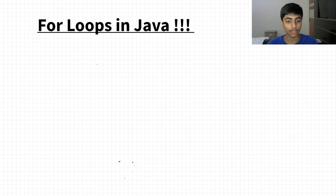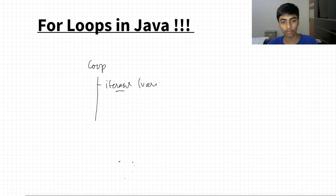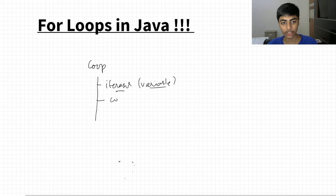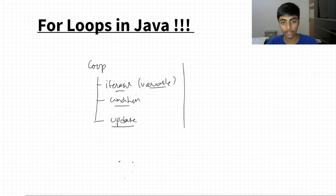Any loop — whether a while loop, for loop, or do-while loop — has three components. First is the iterator: a variable used to control how long the loop proceeds. Second is the condition — as long as it's met, you execute a block of code. Third is the update. You'll understand why you need the update as we proceed.